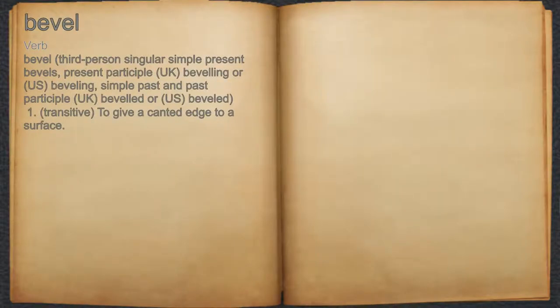Bevel. Verb. 1. Transitive — to give a canted edge to a surface.